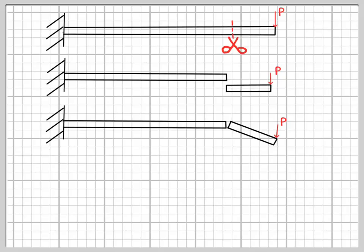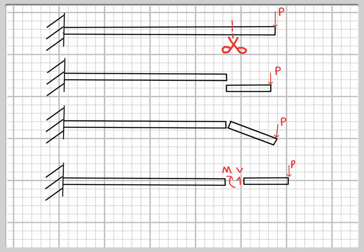But there must be forces preventing both the vertical movement and the rotation. And it's these forces which are internal to the beam that are known as the shear force and the bending moment in the beam.